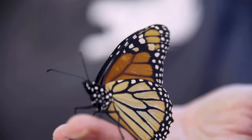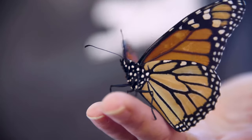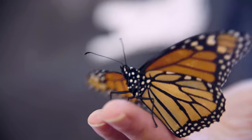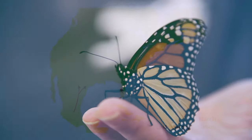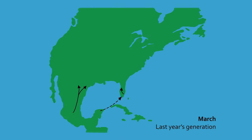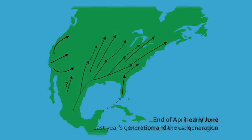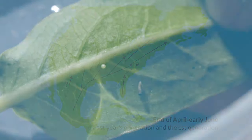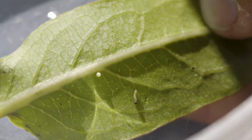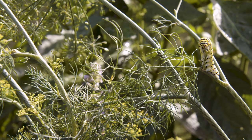For us in Oklahoma, we will see the first monarchs of the year in spring, usually around April. That's the first generation that's been laid by the overwintering generation. In February or March every year, the overwintering generation will leave Mexico and they'll get to about Texas where they're going to breed, lay eggs, and die.